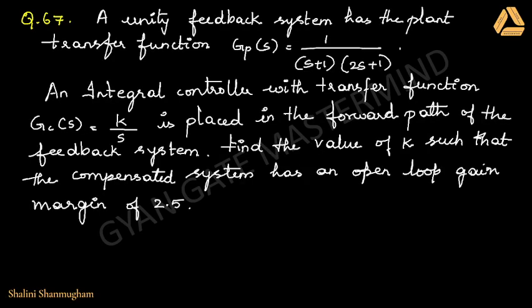Welcome. Today I am going to solve three problems in controllers. Coming to the 67th question: a unity feedback system has the plant transfer function Gp(s) equal to 1 divided by (s+1)(2s+1). An integral controller with transfer function Gc(s) equal to K by s is placed in the forward path of the feedback system. Find the value of K such that the compensated system has an open loop gain margin of 2.5.